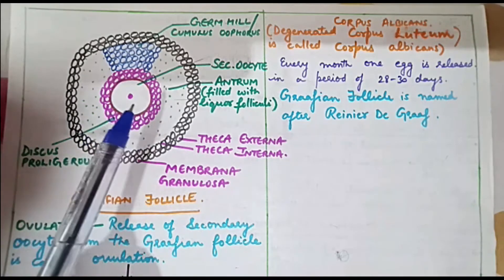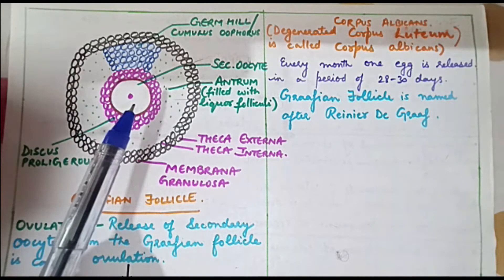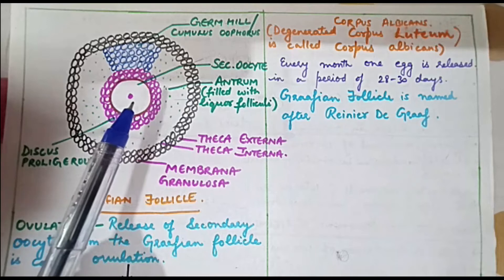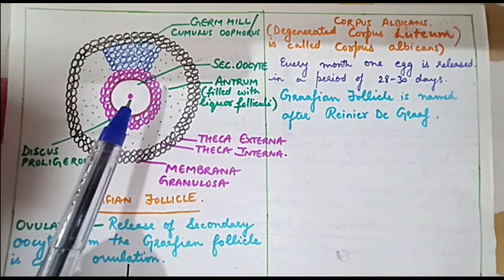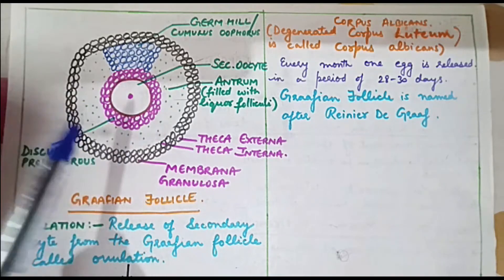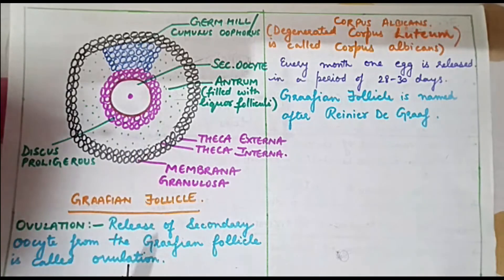This secondary oocyte which is present in the central part of Graafian follicle is released from this Graafian follicle every month. Release of this secondary oocyte from this structure, the Graafian follicle, is known as ovulation.